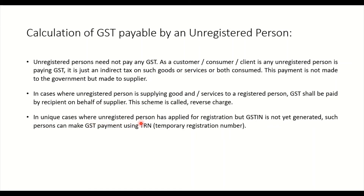In unique cases where an unregistered person has applied for registration but the GSTIN is not yet generated, it means the registration process is still in progress. Such persons can make GST payment using TRN, that is the Temporary Registration Number.